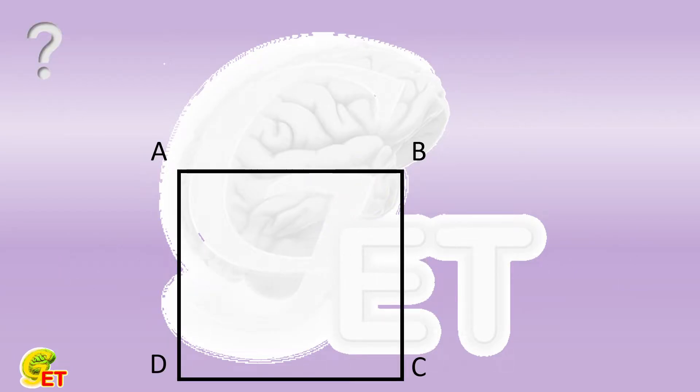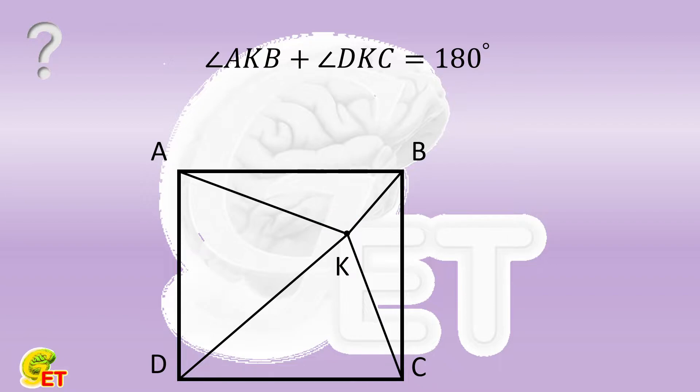In a rectangle ABCD, there is a point K. We connect K and the four vertices of the rectangle, respectively. It is known that angle AKB plus angle DKC equals 180 degrees. What is the sum of angle KAB plus angle KCD?